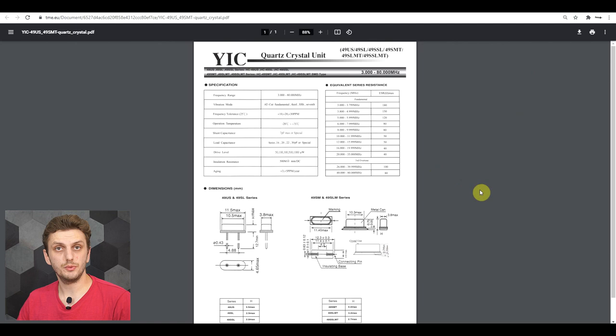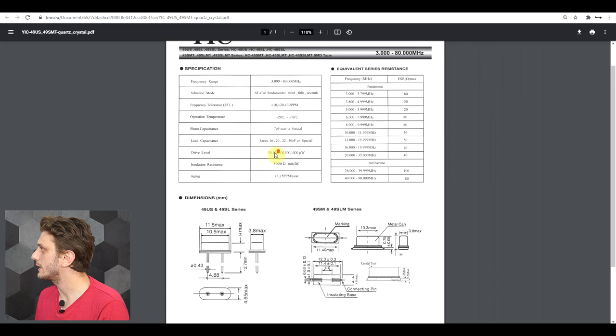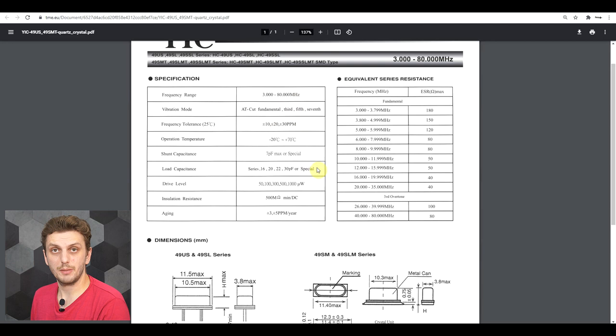But what do you do if you don't have these parameters in the datasheet? So normally your quartz datasheet will look something like this. You will have some frequency ranges specified, some tolerances, and the only parameter out of our four components will be the ESR. So this will be stated as a maximum value, and nothing else will be provided. So what do you do then?